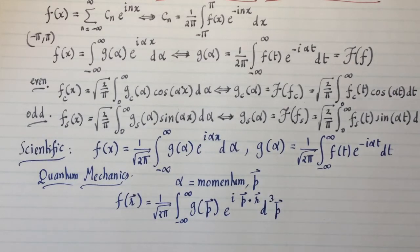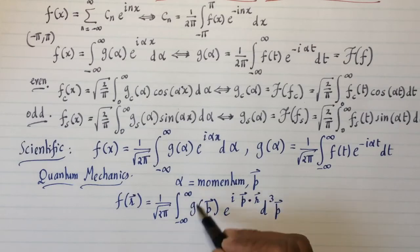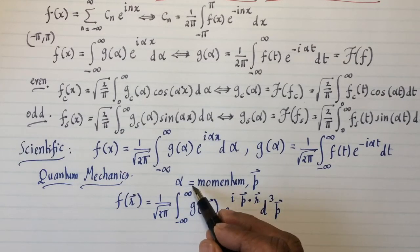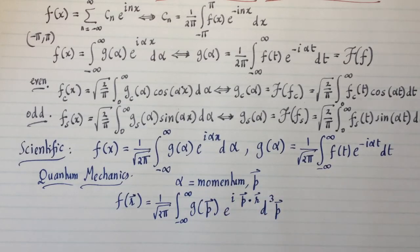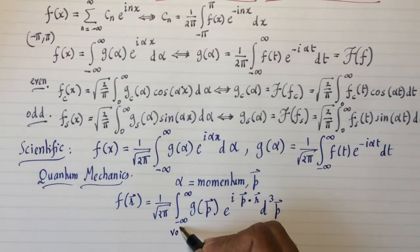d cubed p. I'm maybe taking this a little bit further than I'm supposed to, but this is a graduate course. I can do whatever I want, right? So this is going to be d cubed p, and that's going to be over all the momentum volume. So that's a three dimensional integral from minus infinity to plus infinity in the p x direction, minus infinity to plus infinity in the p y direction, and minus infinity to plus infinity in the p z direction. So it's over all the momentum volumes.